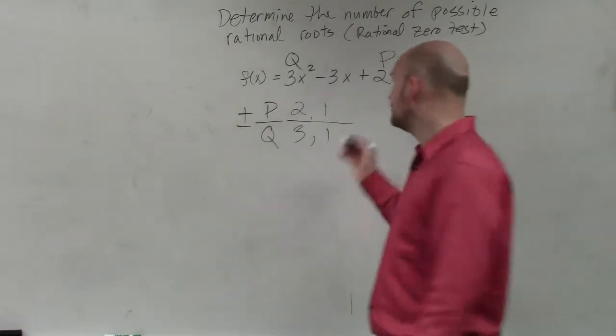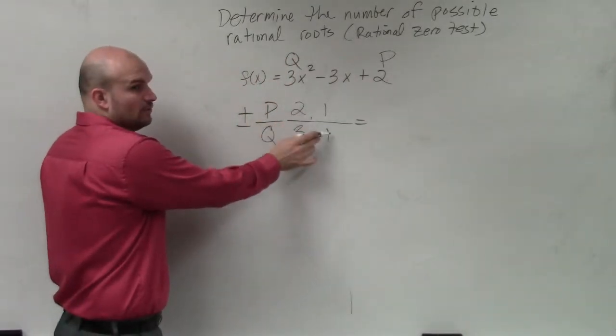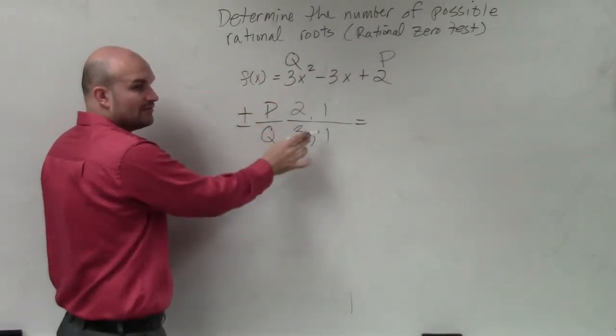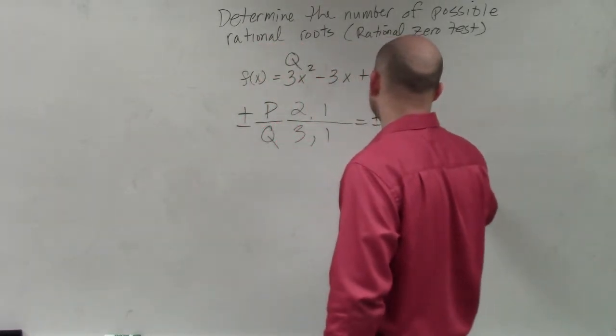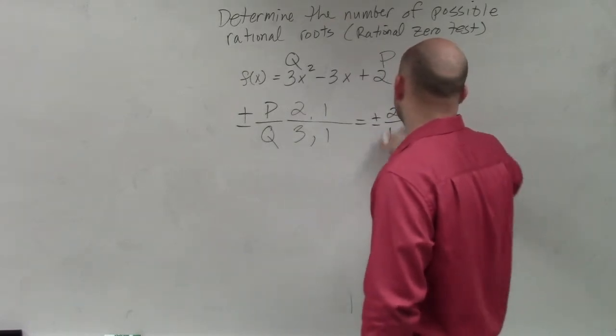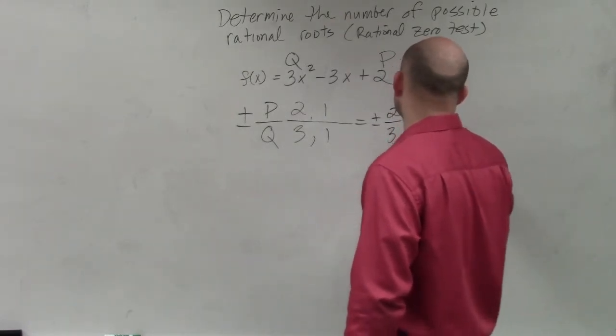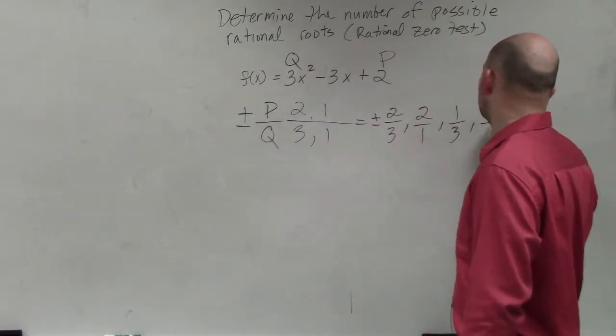And then, all we simply do is write them out. 2 over 3, 2 over 1, 1 over 3, 1 over 1. So 2 over 1, I'm sorry. All right, I'll do it. 2 over 1, now let's do 2 over 3, 2 over 1, 1 over 3, 1 over 1.